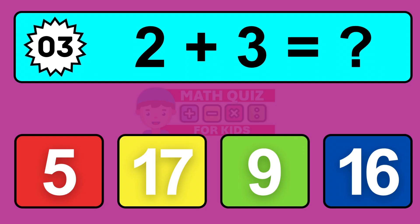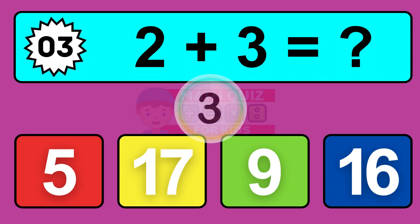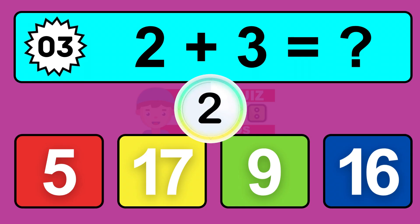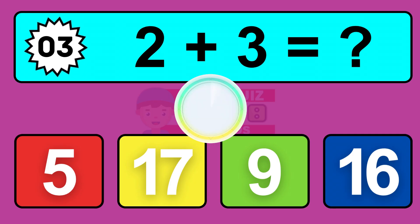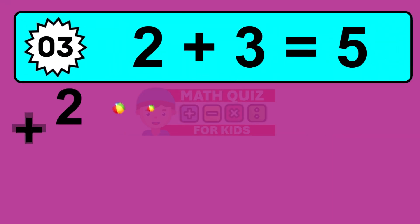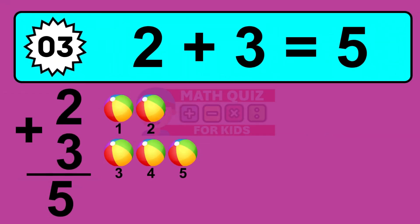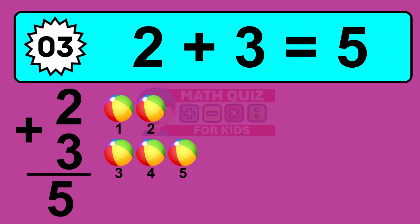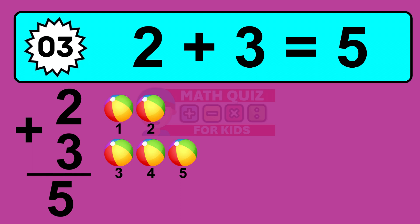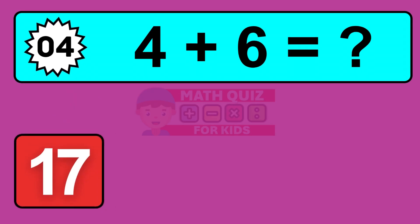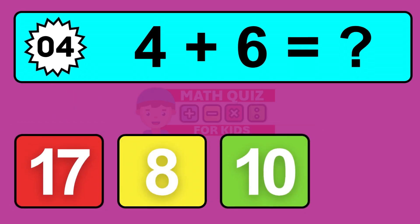Question 3. 2 plus 3 equals what? The answer is 2 plus 3 is 5. Let's count it: 1, 2, 3, 4, 5.